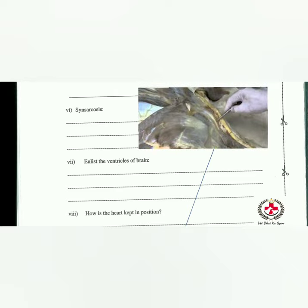Synsarcosis: this is the first type of joint — it is between bone and muscle tissue where the subscapular muscle joins the scapula with the ribs. The joint of the subscapular muscle with the scapula is called synsarcosis.